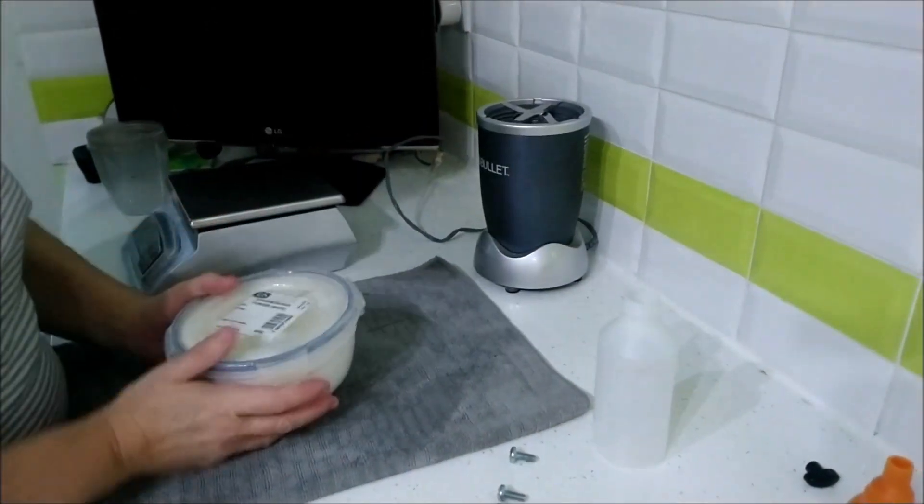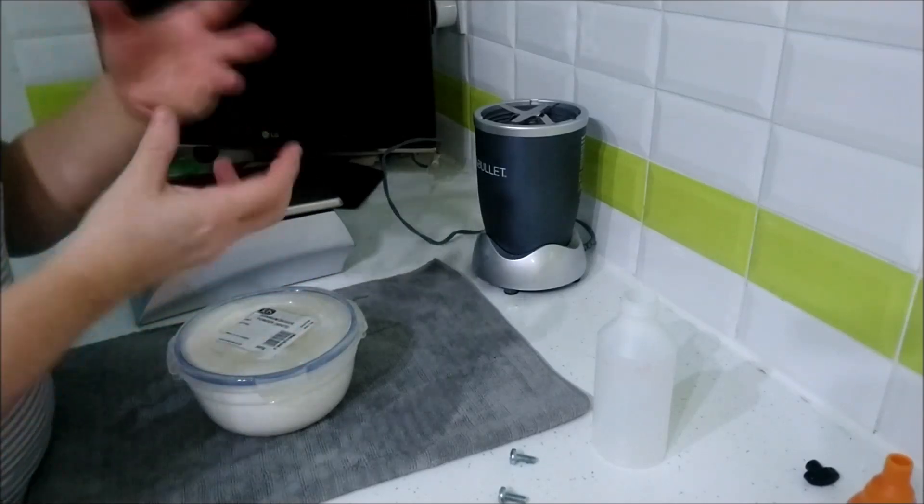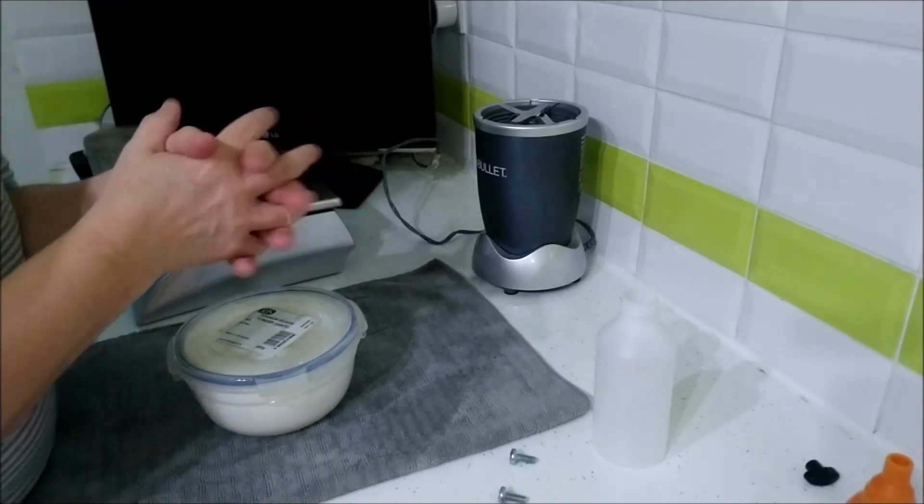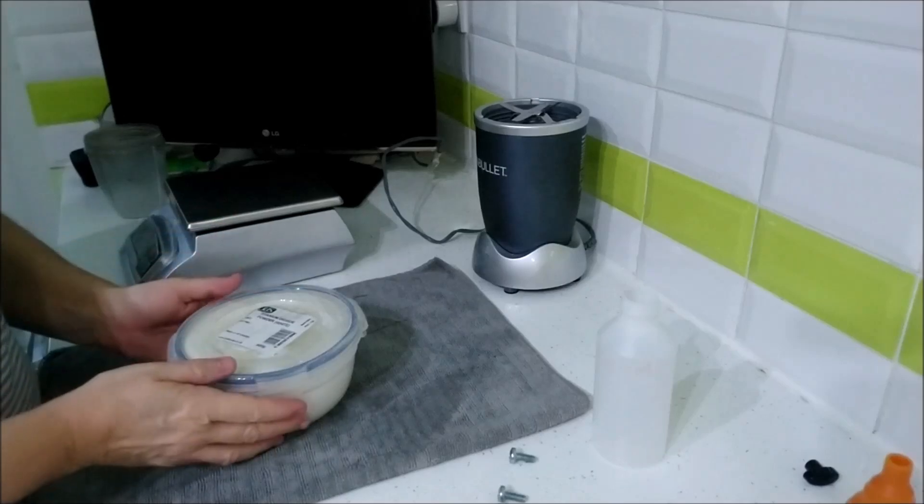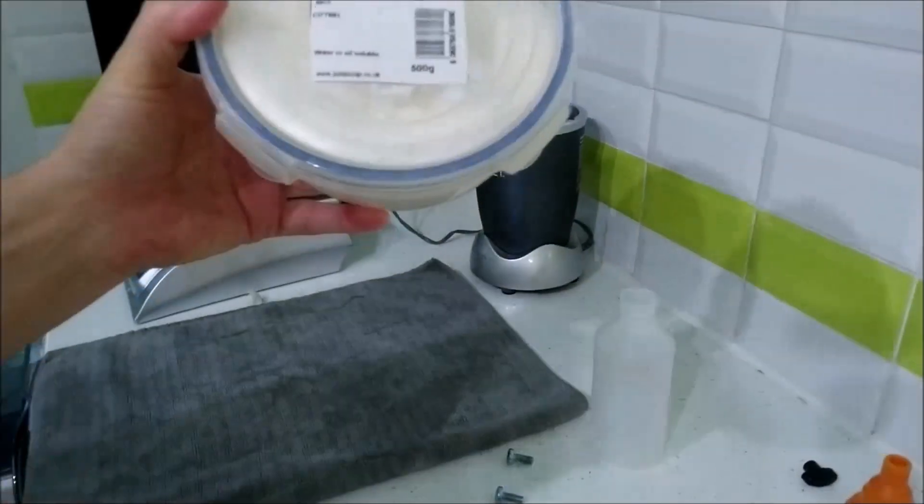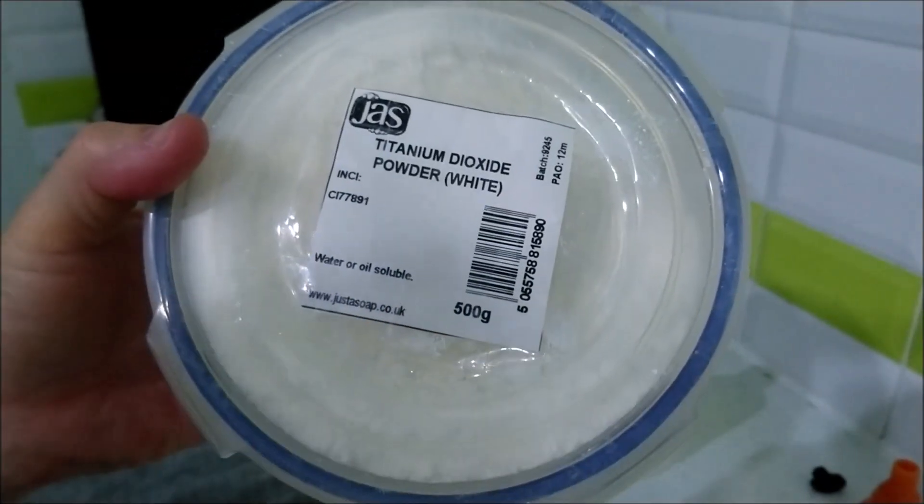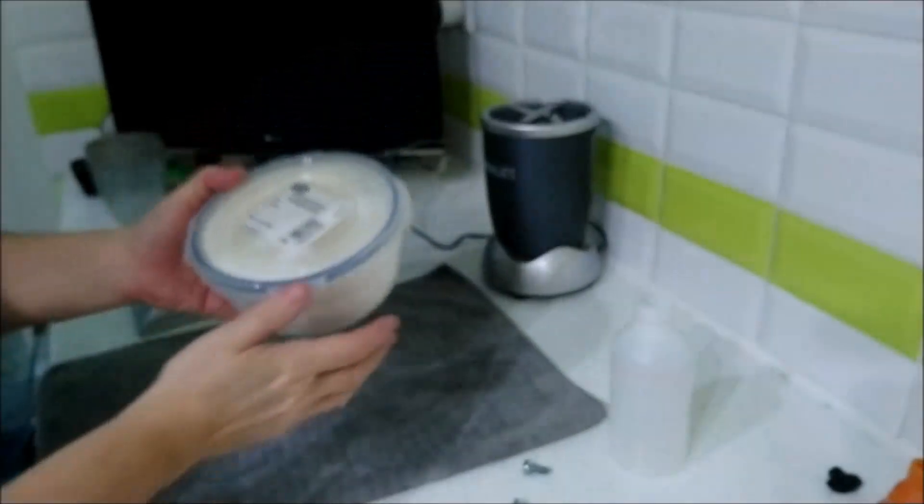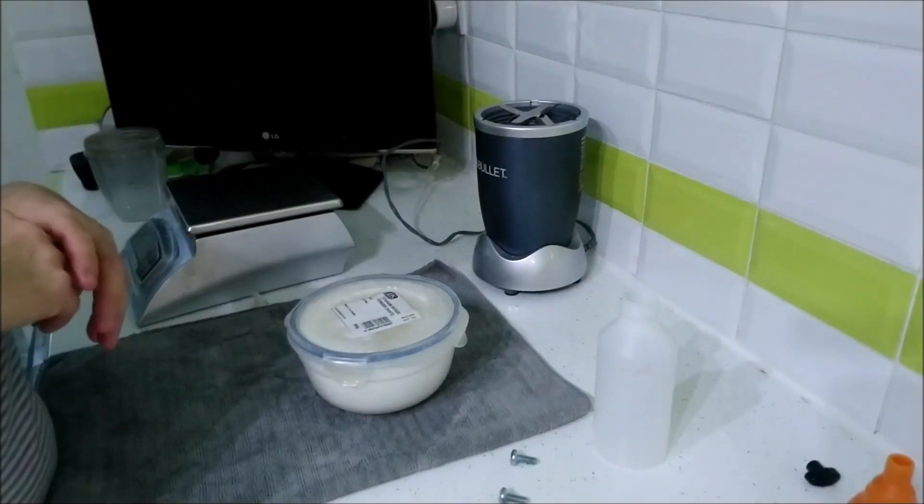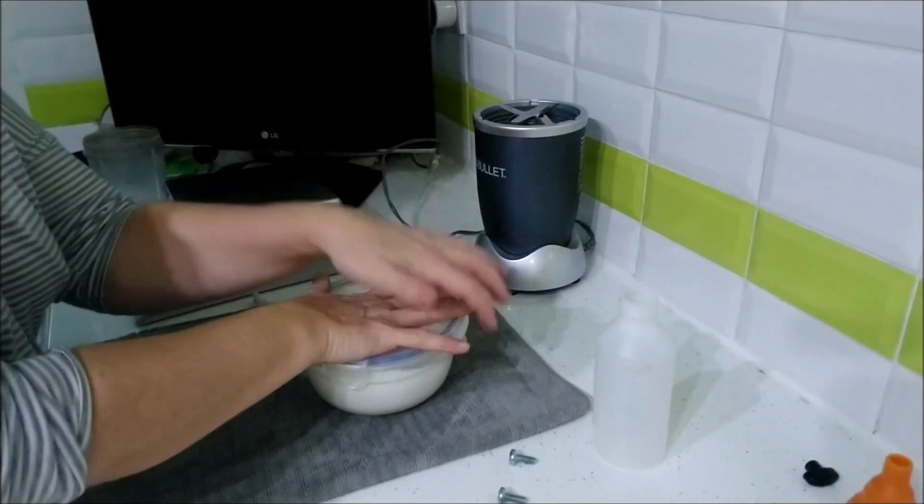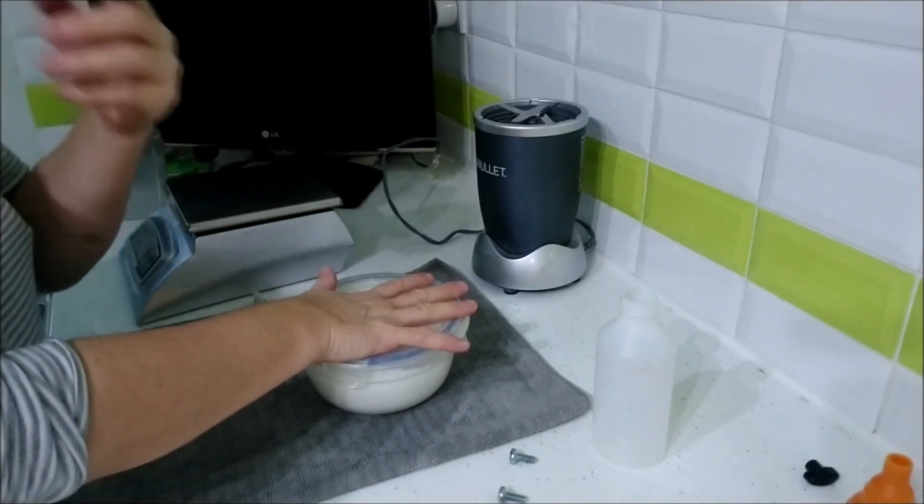When you've got your titanium dioxide, make sure you know what type you've got. Your soap supplier should tell you whether it's water or oil soluble, or some are actually both. You can see with mine, I'm lucky mine is water or oil soluble. You might want to play around with both types to see which one works better for you. I personally like using oil because it stops you adding extra water.